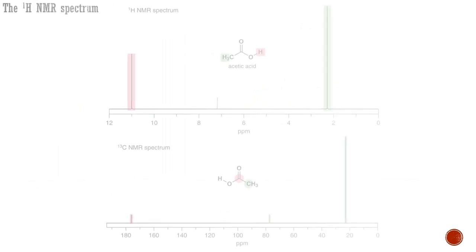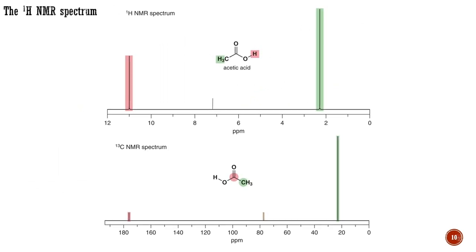Proton NMR spectra are recorded in the same way as carbon NMR spectra. Radio waves are used to study the energy level differences of nuclei, but this time they are hydrogen-1 and not carbon-13 nuclei. Like carbon-13, hydrogen-1 nuclei have a nuclear spin of one half, and so have two energy levels — they can be aligned either with or against the applied magnetic field. Here, as an example, is the proton NMR spectrum of acetic acid. Proton NMR spectra have many similarities with carbon NMR spectra: the scale runs from right to left, and the zero point is given by the same reference compound, though it is the proton resonance of tetramethylsilane that defines the zero point.